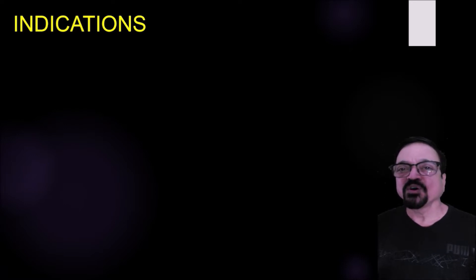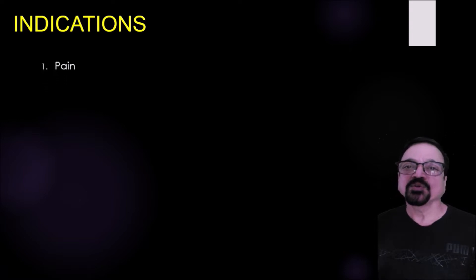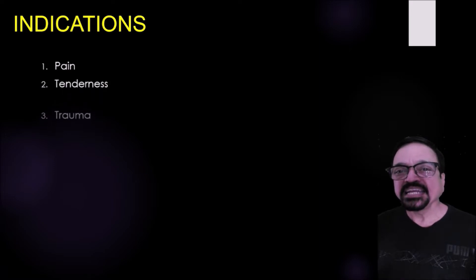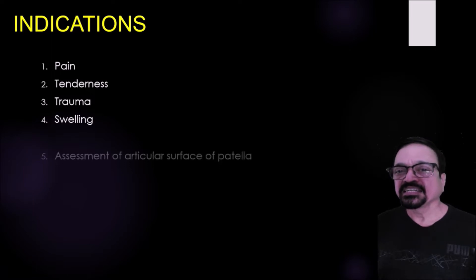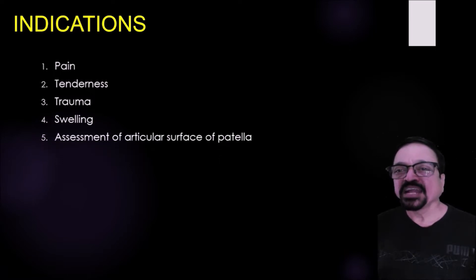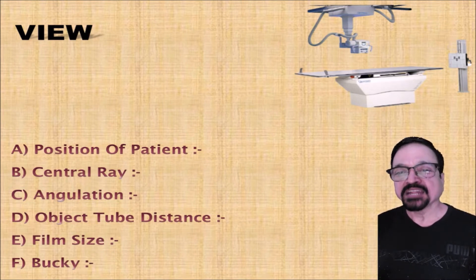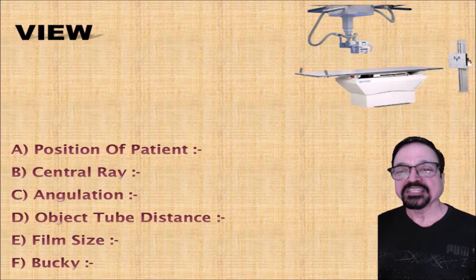In that condition we have to go for oblique. The technique is the same as that of the AP except that you rotate the patient according to the site of injury or area that is projected. The main indication for a skyline view is to visualize the articular surface of the patella which is in contact with the joint. Any pathology suspected to the articular surface requires this skyline view.